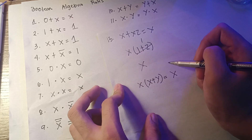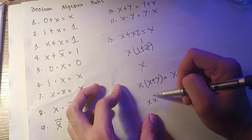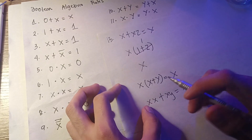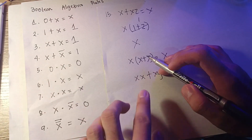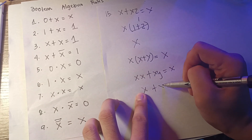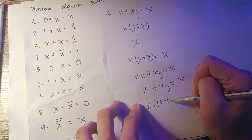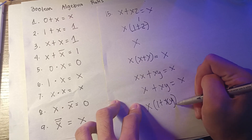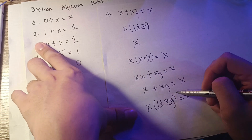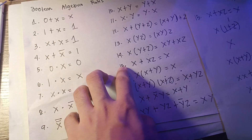Rule 16 states that x times (x plus y) equals x. We distribute to get x·x + xy. By rule 7, x·x equals x, so we have x + xy. We factor x out to get x(1 + y). By rule 2, 1 plus y equals 1, so the result is x. That is how we get rules 15 and 16.